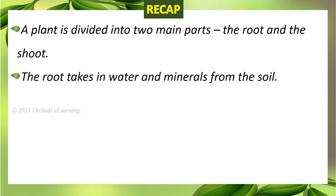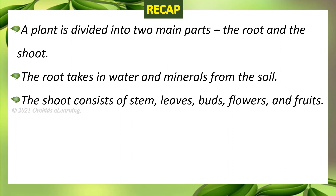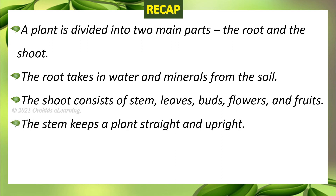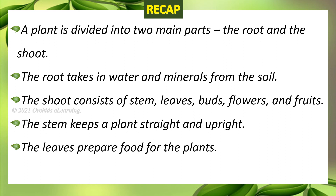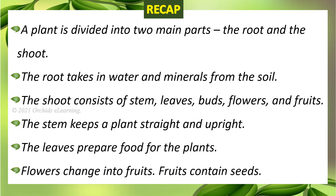Recap: a plant is divided into two main parts — the root and the shoot. The root takes in water and minerals from the soil. The shoot consists of stem, leaves, buds, flowers, and fruits. The stem keeps a plant straight and upright. The leaves prepare food for the plant. Flowers change into fruits, and fruits contain seeds.